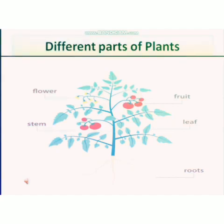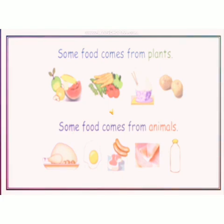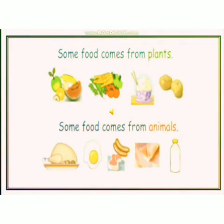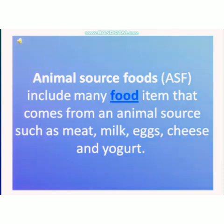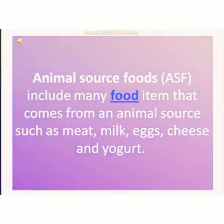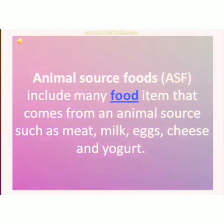Now we will continue with our new topic. We will discuss the different types of food items obtained from animals — like meat, chicken, eggs from hens, and honey from honeybees. Animal source foods include many items such as meat, milk, eggs, cheese, and yogurt — all of which we obtain from animals.